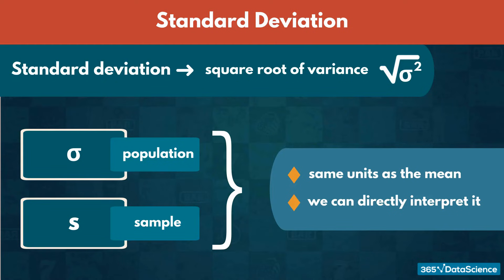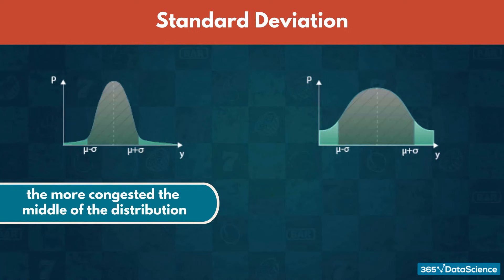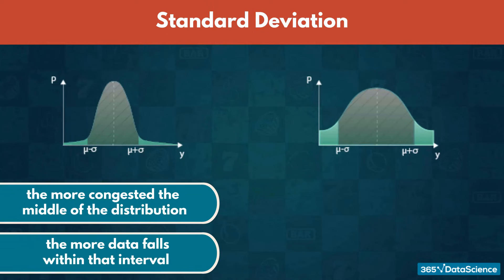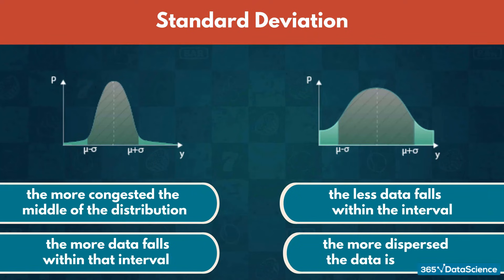One idea, which we will use a lot, is that any value between mu minus sigma and mu plus sigma falls within one standard deviation away from the mean. The more congested the middle of the distribution, the more data falls within that interval. Similarly, the less data that falls within the interval, the more dispersed the data is.